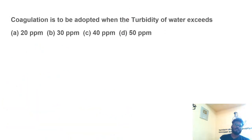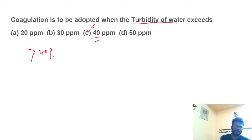Coagulation is to be adopted when the turbidity of water exceeds 40 ppm. Since it is greater than 40 ppm, we can do coagulation.